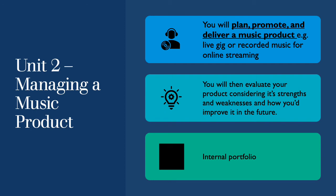Unit two is called managing a music product. During this unit you will work together as a team to plan, promote and deliver a music product. This could be a live gig or recorded music for an online streaming service. Once you have delivered the product you will then evaluate it, considering its strengths and weaknesses and how you would improve it in the future.